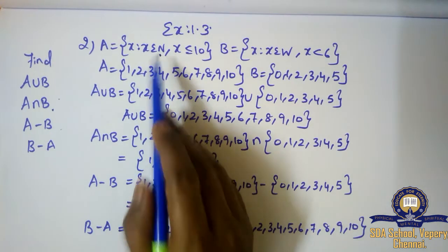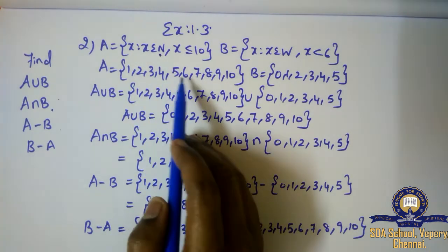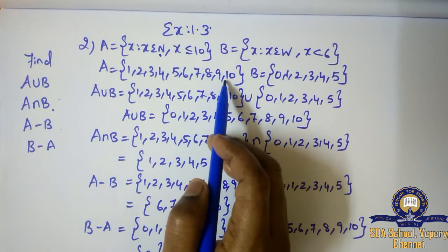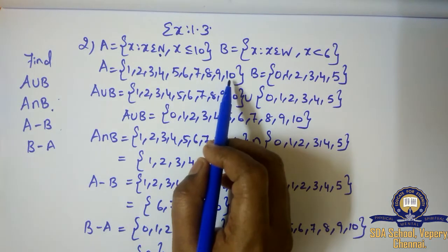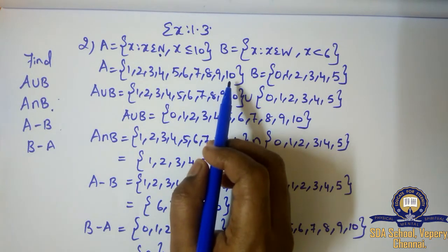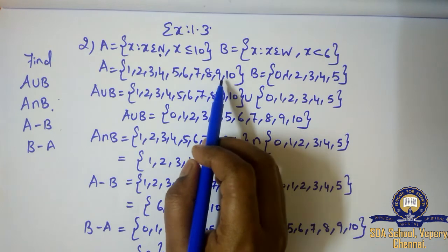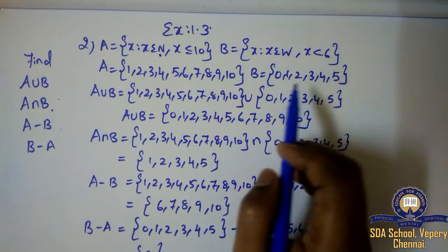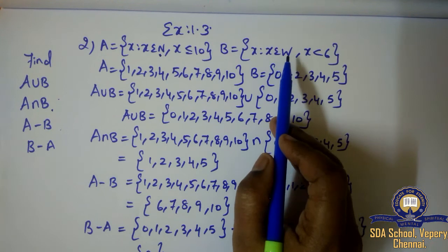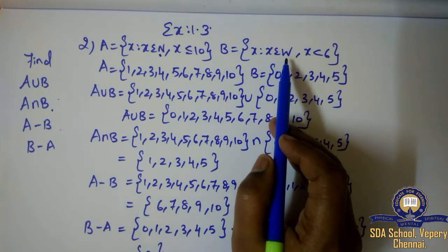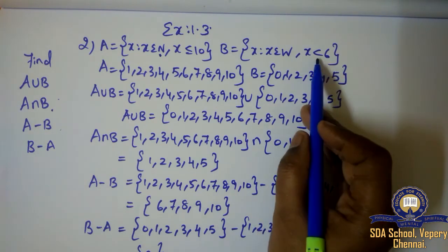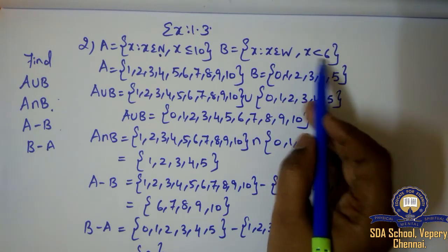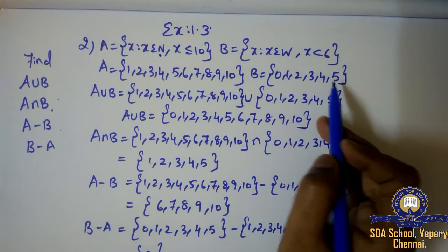Natural numbers start from 1, so A is {1, 2, 3, 4, 5, ..., 10}. We include 10 because the condition is less than or equal to 10. If it were only less than, we would write up to 9. Next, B: W stands for whole numbers, which start from 0. With the restriction x less than 6, B is {0, 1, 2, 3, 4, 5}. We do not include 6 since the condition is strictly less than 6.